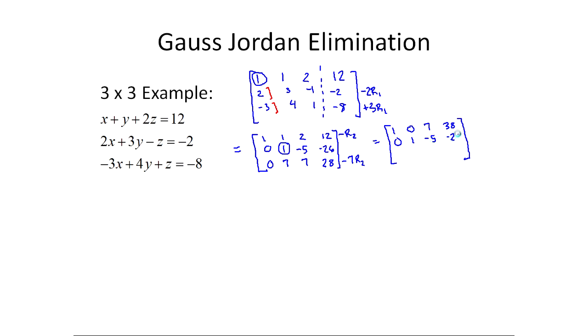So now I've got the second row didn't change. Now this last row. So negative 7. Remember, I'm using row 2 now. So negative 7 times 0 is 0. Add it to 0. It's 0. That's always going to happen. That's what I want to have happen. Minus 7 times 1 is minus 7. And 7 is 0. Same idea. Minus 7 times minus 5 is 35. 35 and 7 is 42.